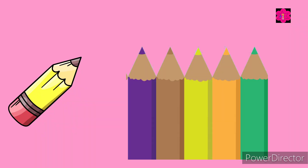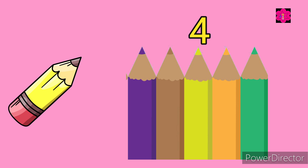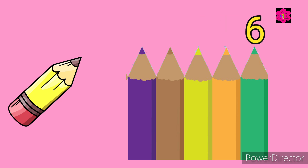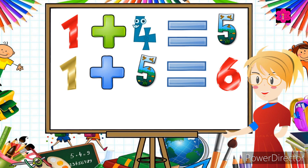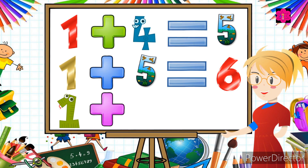One pencil — now we add five more pencils. Count together: one, two, three, four, five, six. One plus five is equal to six. Now the next question: one plus six is equal to...?